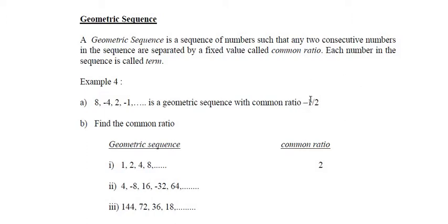So how do we get negative 1 over 2? Negative 4 divide 8 gives negative 1 over 2. 2 divide negative 4 gives negative 1 over 2. Negative 1 divide 2 also gives negative 1 over 2. So when a sequence has a common ratio, we call it a geometric sequence.